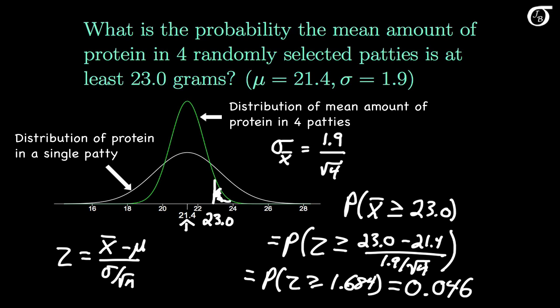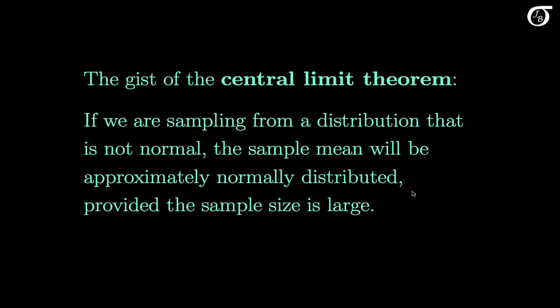In those examples, the distribution of the sample mean was approximately normal because we were sampling from an approximately normally distributed population. But there is a very important concept — the central limit theorem — that helps us calculate probabilities involving the sample mean when we are sampling from distributions that are not normal. The gist is that if we are sampling from a non-normal distribution, the sample mean will still be approximately normal provided we have a large sample size. I'm introducing it briefly here, but I have another video that goes into it in greater detail.